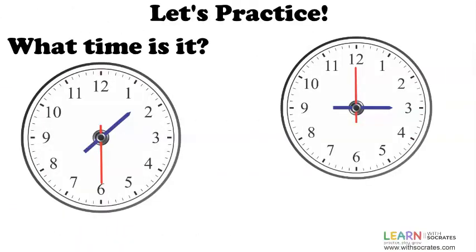Let's practice. What time is it? Look at the first clock. You can see that the hour hand, which is blue, is in between the numbers one and two. That means that the hour is going to be one.